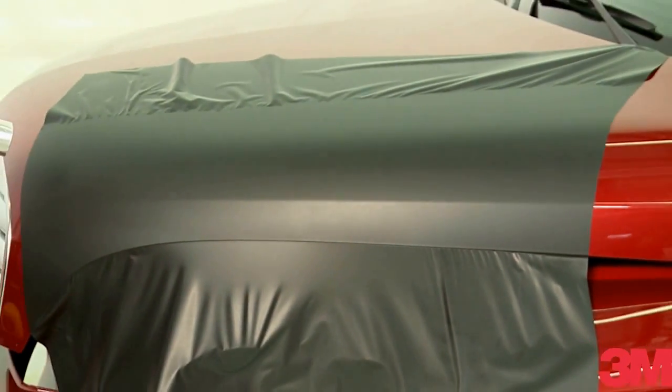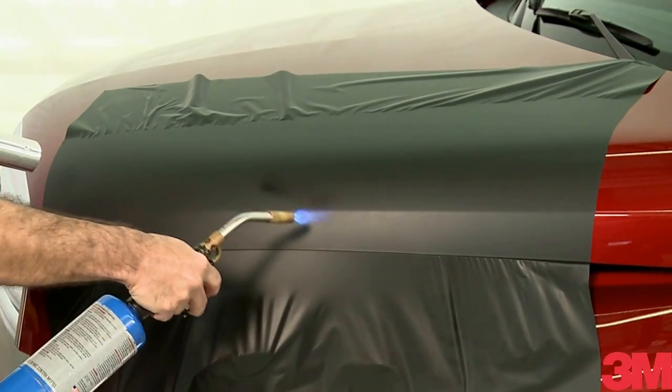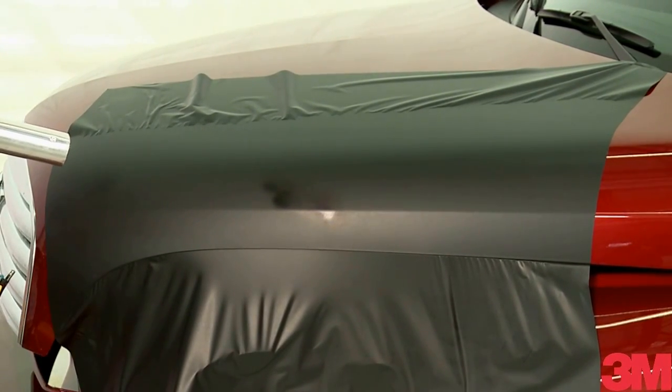If we get it too hot, for example using a torch, it glosses the surface of the film.